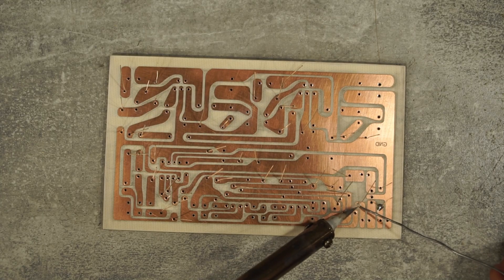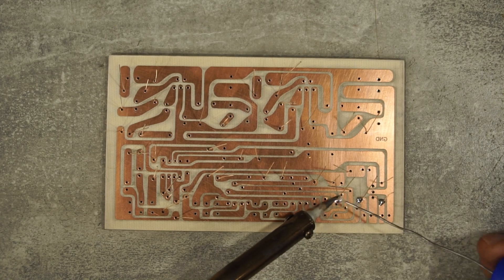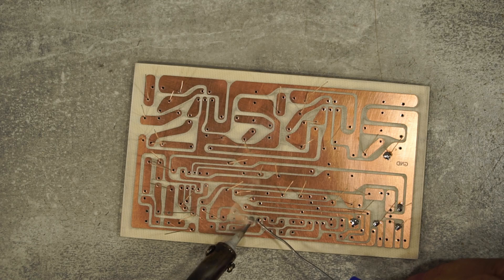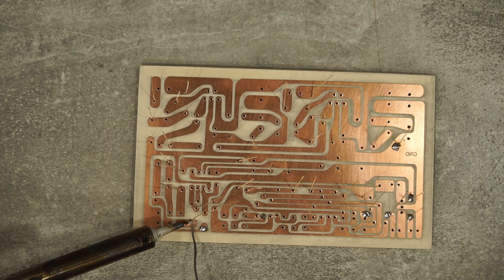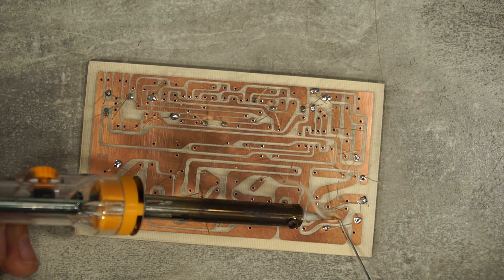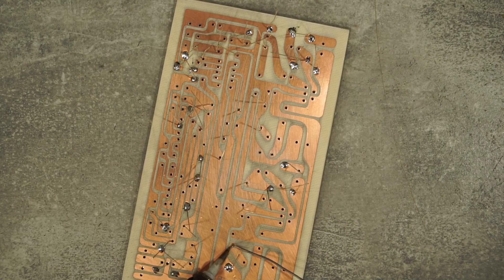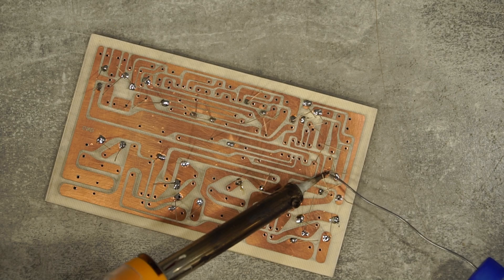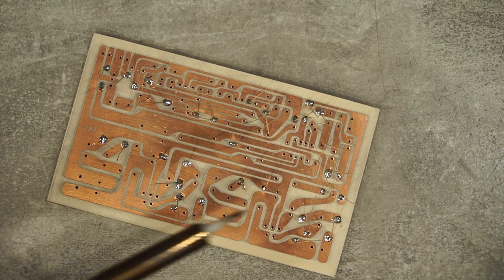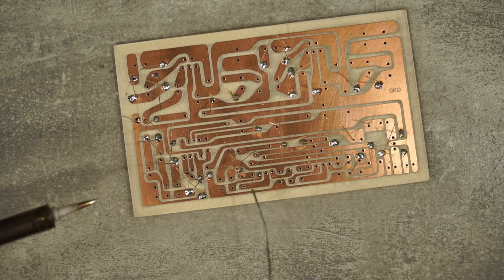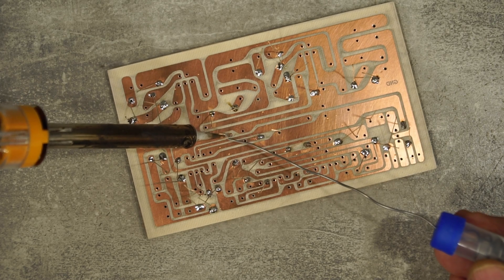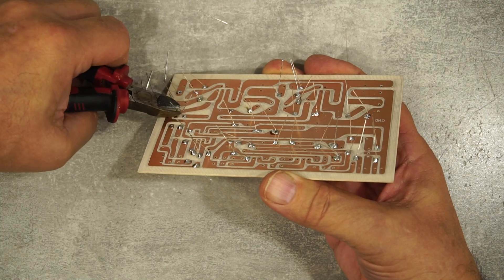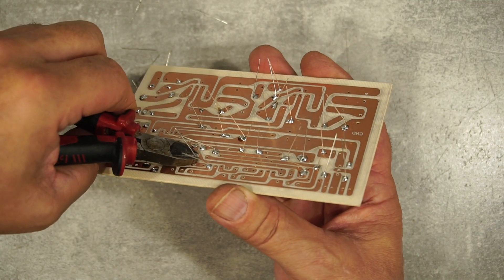I carefully solder the resistors to avoid short circuits between the traces on the circuit board. The solder joints should cover from all sides, be round and shiny. I cut off the excess and keep them to use as bridges, jumpers, where necessary.